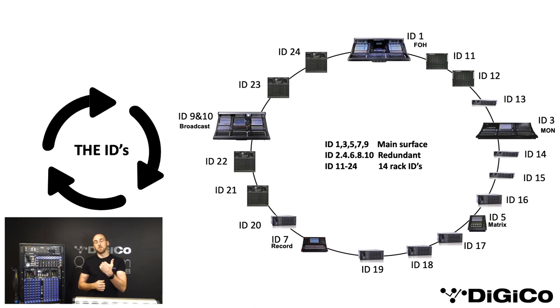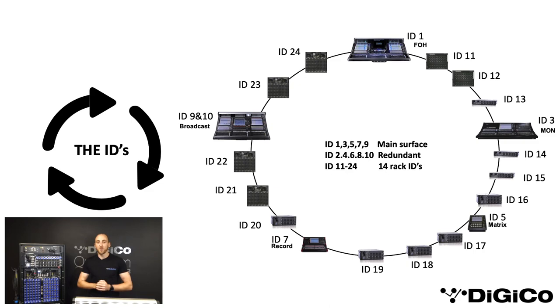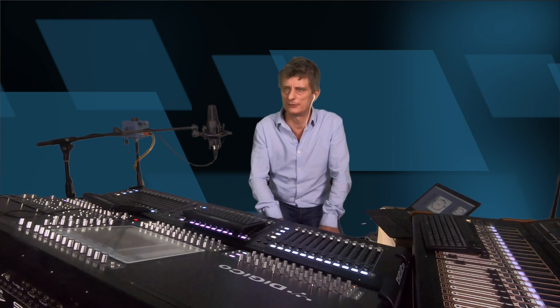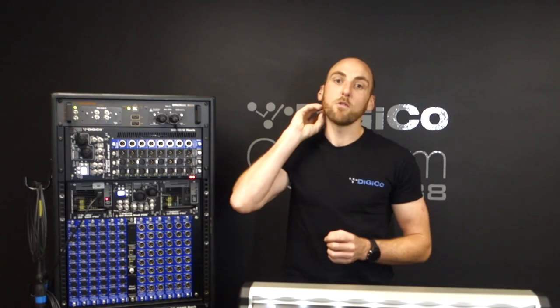So in the optical system, if ID 9 disappears for any reason, ID 10 will then take over all responsibilities within one sample — which is pretty powerful, isn't it Fernando? Yes, Tom. So that means that if I want to add another mirror console for the front of house position, I should use ID number 2, shouldn't I Tom? Correct, yes. So two Quantum 5s should have ID number 1 and ID number 2.